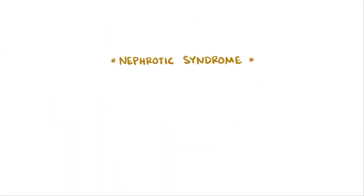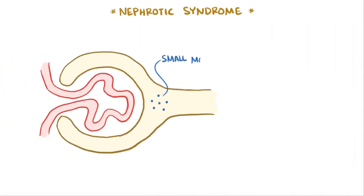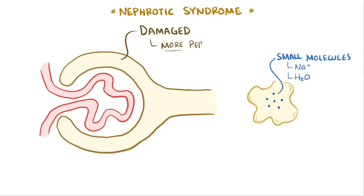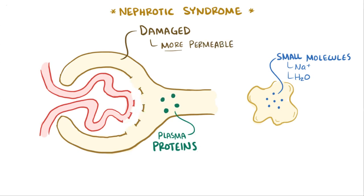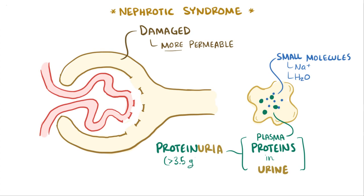But what exactly is nephrotic syndrome? Well, usually the glomerulus only lets small molecules, like sodium and water, move from the blood into the kidney nephron, where it eventually makes its way into the urine. But with nephrotic syndromes, the glomeruli are damaged and they become more permeable, so they start letting plasma proteins come across from the blood to the nephron, and then into the urine, which causes proteinuria, typically greater than 3.5 grams per day.